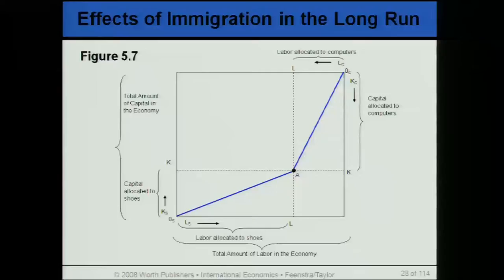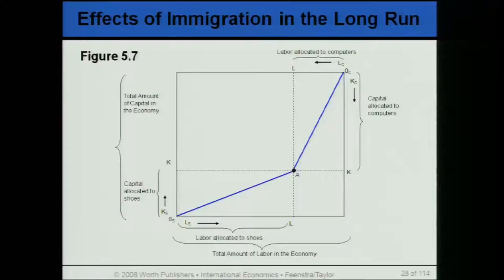Good afternoon. Today we will continue with our discussion on the effects of immigration in the long run. We had seen earlier, while discussing the effects of immigration in the short run, that immigration tends to have an impact on the output mix of manufacturing and the agricultural sector. The output of both agriculture and manufacturing increases, as labor gets absorbed in both sectors — manufacturing, which is capital specific, and the agricultural sector, which is land specific.